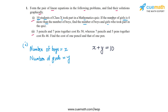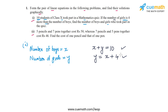Also, the problem statement says that the number of girls is 4 more than the number of boys. So we can write y is equal to x plus 4. This is our second equation in x and y. So we got two equations: x plus y equal to 10 and y equal to x plus 4. Now let's plot both of these equations and find the solution graphically.